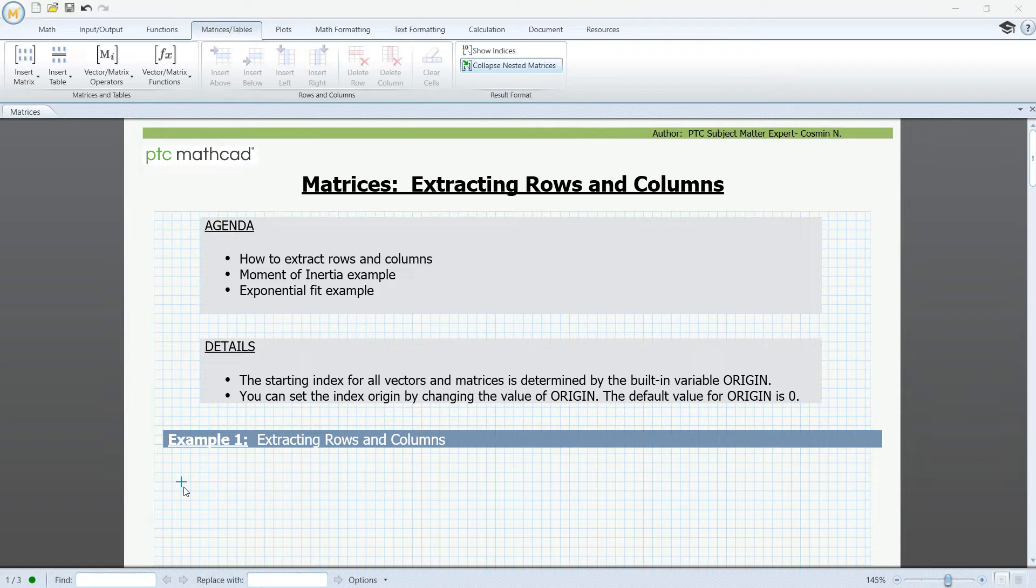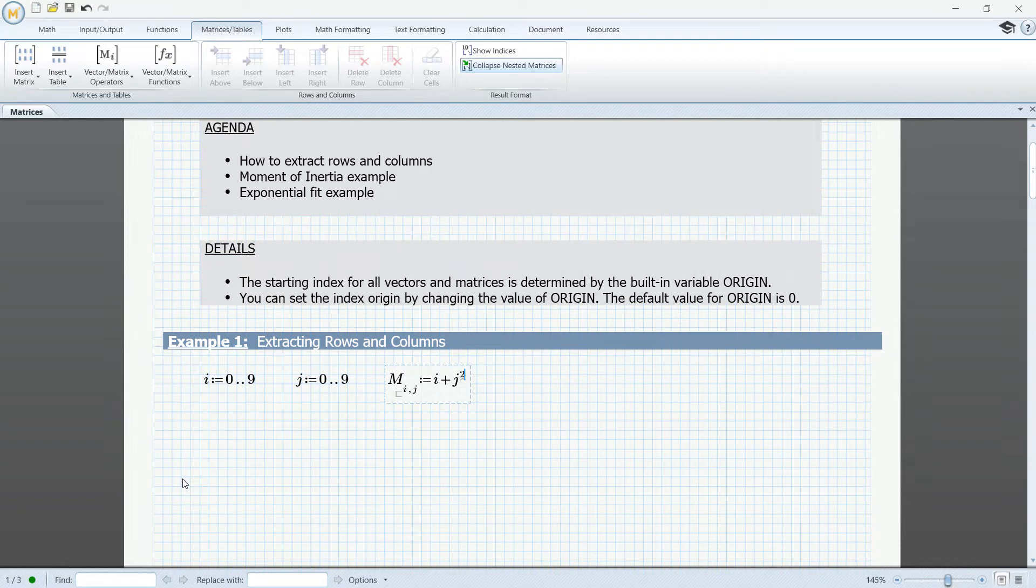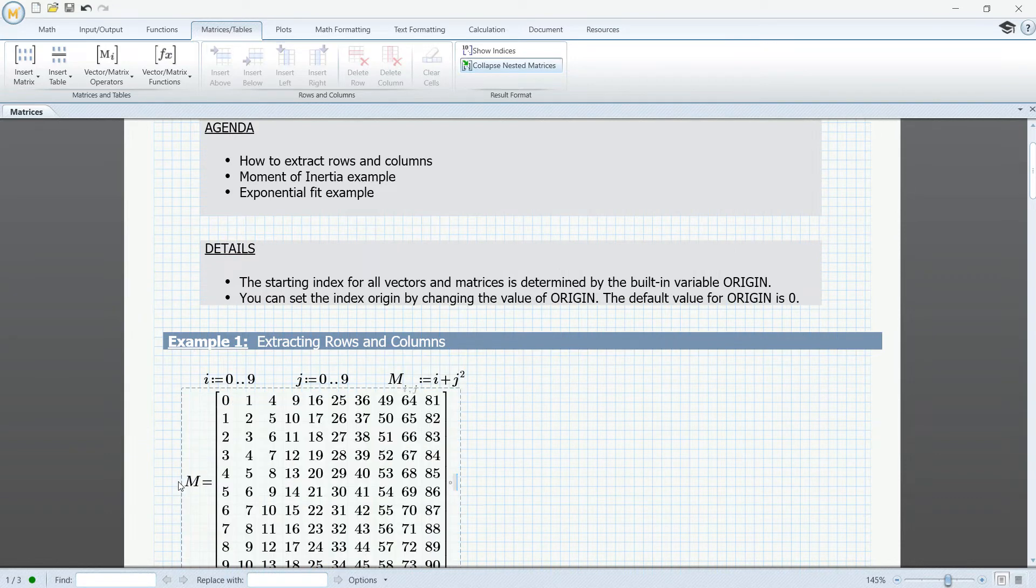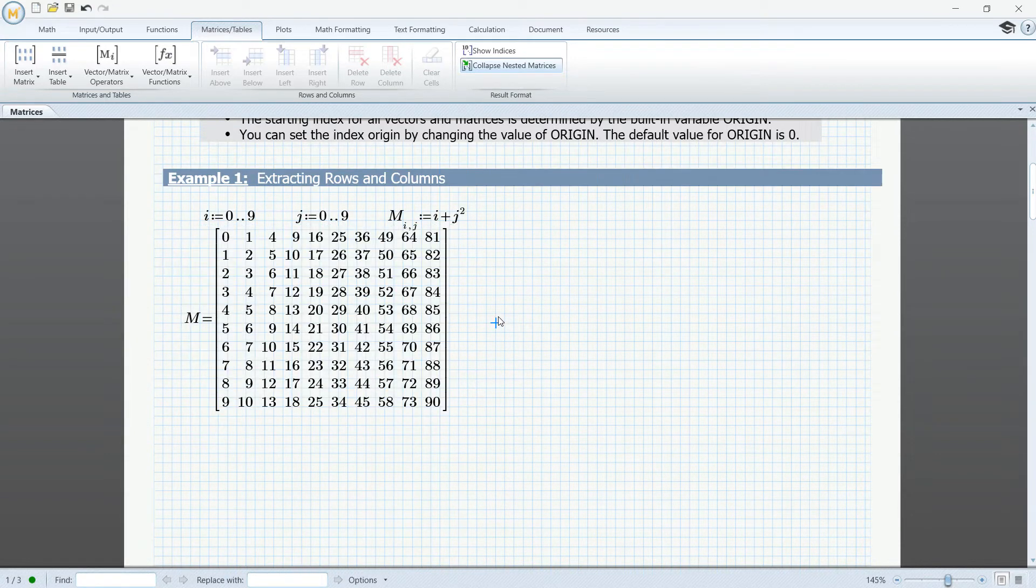For that, we will need an array of data that I will generate using range variables. So let's go ahead and define the first range variable going from 0 to 9, and I will need a second one again going from 0 to 9. Let me go ahead and define a matrix that will be made out of elements of i plus j squared. And if we go here and evaluate, we will see that the matrix has been generated.